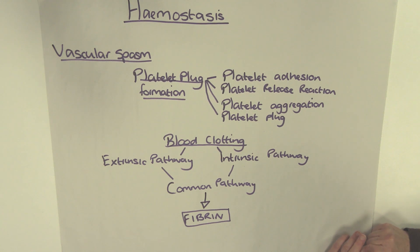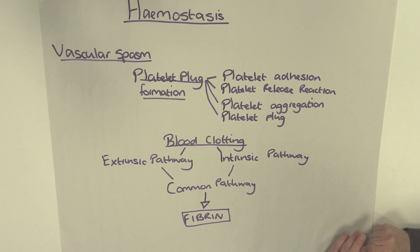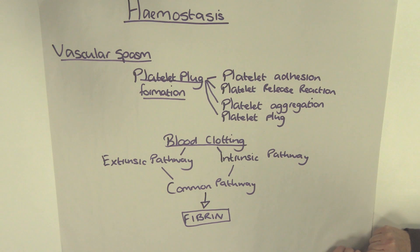Clots are constantly being made and broken down by the fibrinolytic system in our body. If the blood clots too easily, a thrombosis may occur. If blood takes too long to clot, haemorrhage can occur. So the body maintains a fine balance of haemostasis.